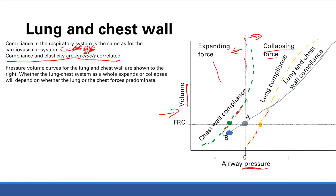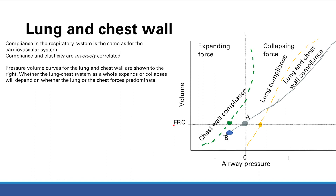You have to think of your lung and chest wall as a system — they have to go together. Where they will go depends on the balance between the two. Starting at functional residual capacity, which is the volume of air after a normal expiration: if you look at the curve for the chest wall and the curve for the lung and take the average between the two, you see there is exactly zero airway pressure — no expanding or collapsing force. Your lung and chest wall system is in equilibrium here.